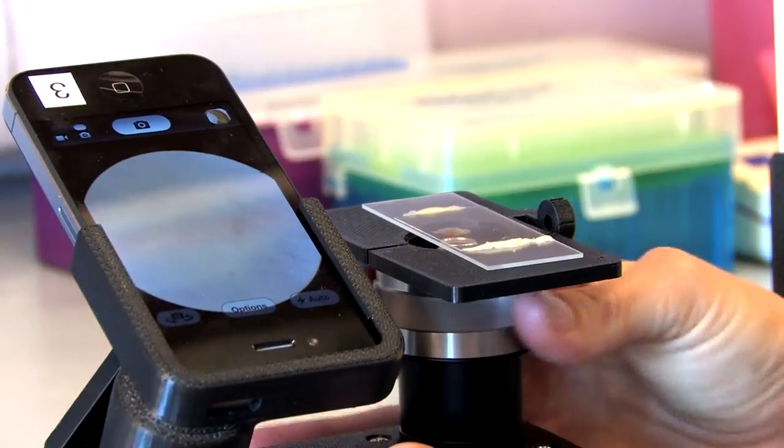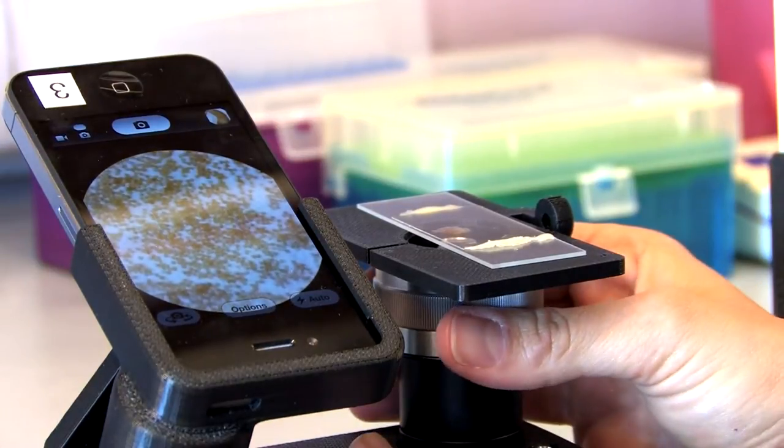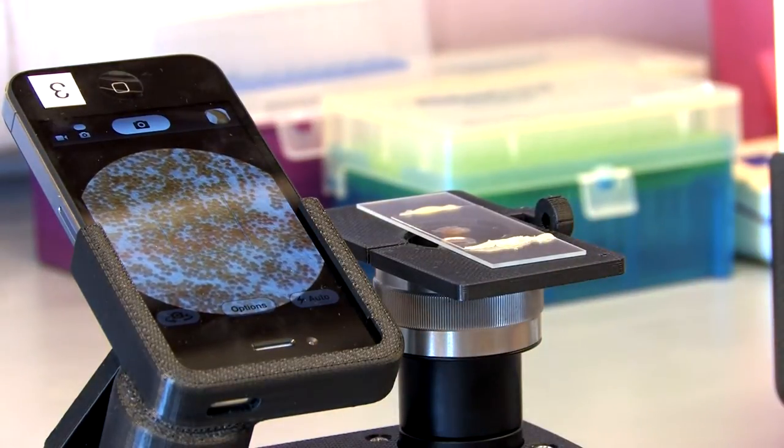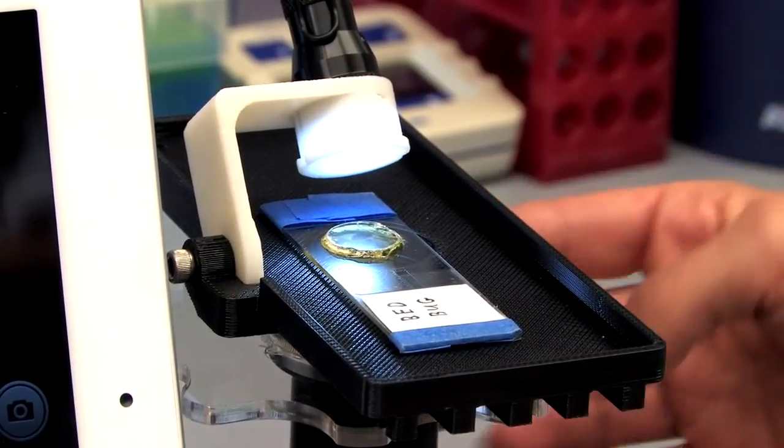The original CellScope that was developed was a very simple device that could use the cell phone as a camera and take pictures of microscopic samples. We print the parts, the plastic parts are printed on our 3D printer here in the lab.